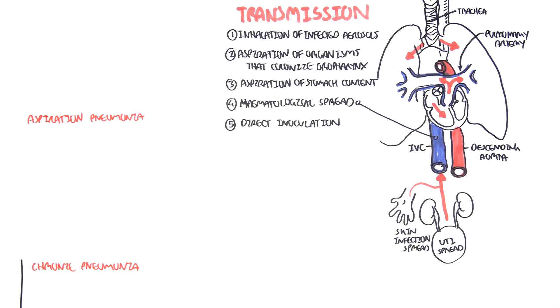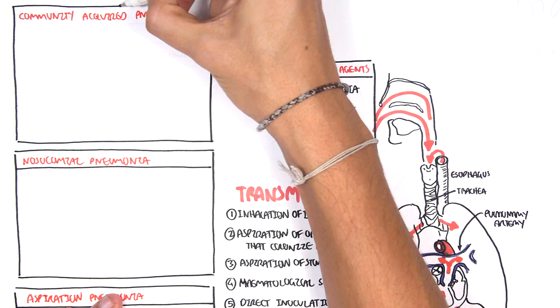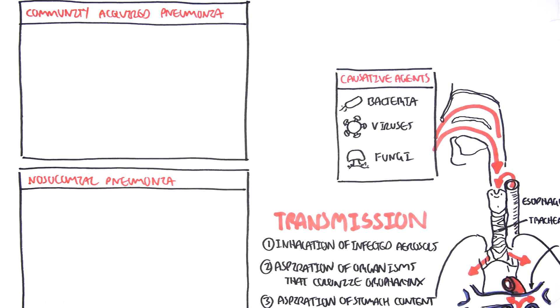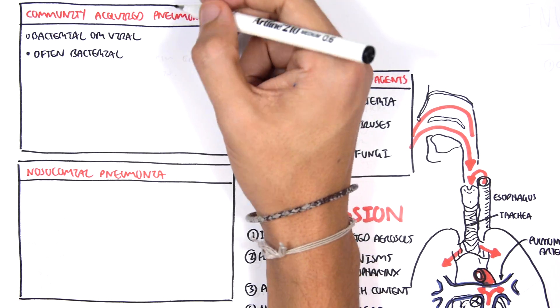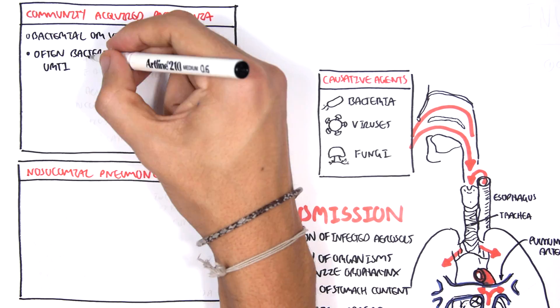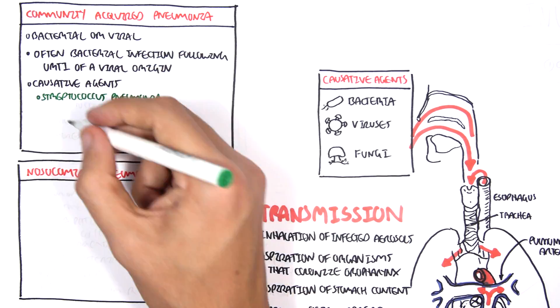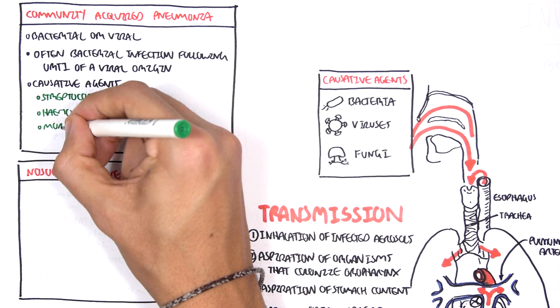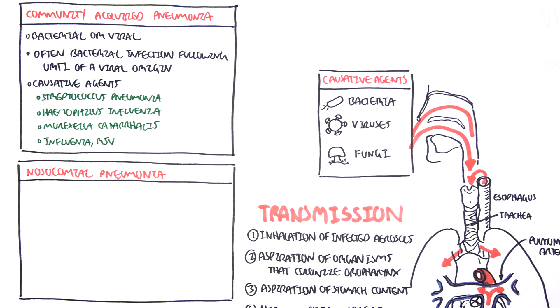Let us begin with community acquired pneumonia. Community acquired pneumonia is mostly bacterial or viral. It's often bacterial infection following an upper respiratory tract infection of a viral origin. Causative agents include streptococcus pneumoniae, Haemophilus influenzae, Moraxella catarrhalis, as well as influenza virus and RSV.